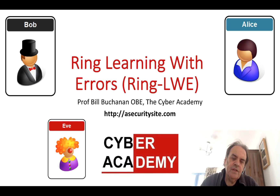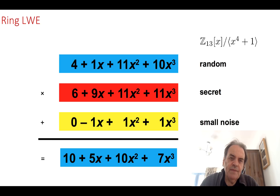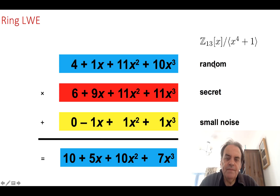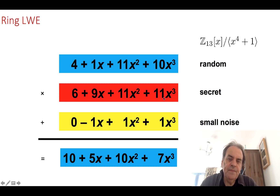Ring learning with errors is slightly different in its approach — this time we deal with polynomials. A polynomial is something like 4 plus x plus 11x² plus 10x³. In Python we can create our polynomial as [4, 1, 11, 10]. We then multiply that by a secret polynomial, take a small noise polynomial, and add that to get our result.